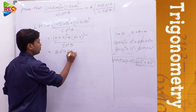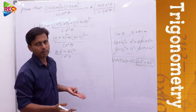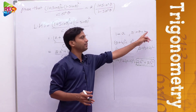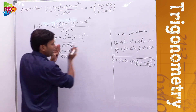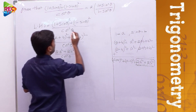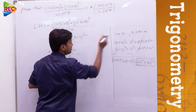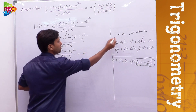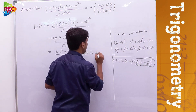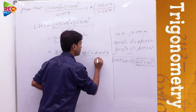So the numerator simplifies to 2a² + 2b², all divided by cos²θ. Now substituting back: a = 1 and b = sinθ, we get 2(1²) + 2sin²θ, which is 2 + 2sin²θ, over cos²θ.